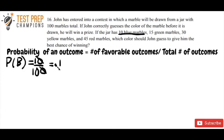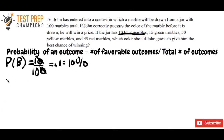So the probability of drawing a blue marble is 0.1. We can express this as a fraction — 1 over 10 — or as a decimal — 0.1 — or as a percent, which is 10%. So there are three ways you can write a probability.